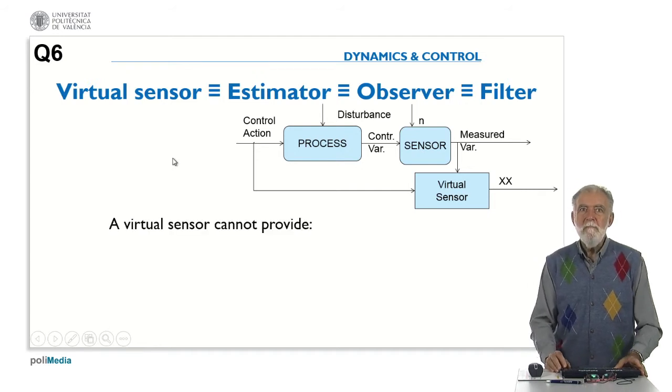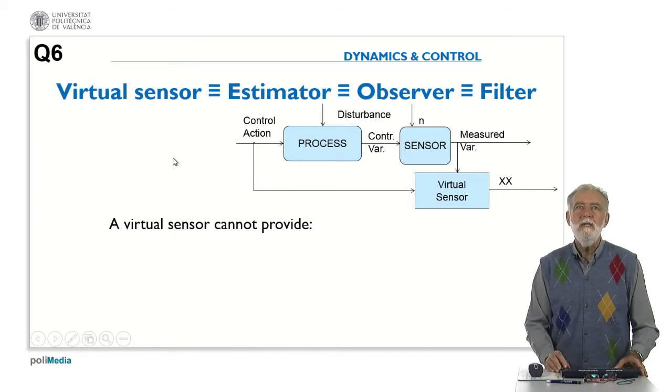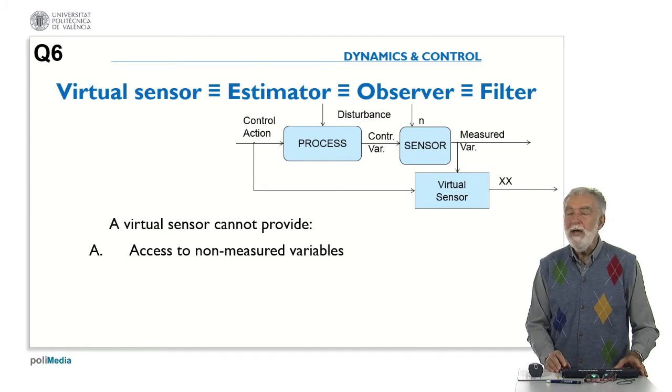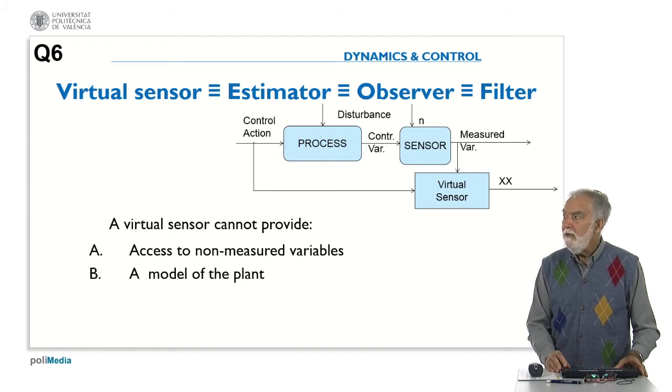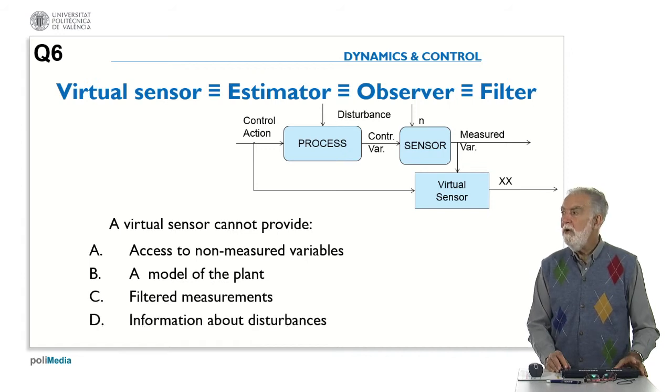So, the question is what we can get from a virtual sensor? In which way a virtual sensor can be used? It can be used to access non-measured variables, it can be used to get a model of the plant, it can be used to get filtered measurements, or it can provide information about disturbances. Please think about that. Thank you.